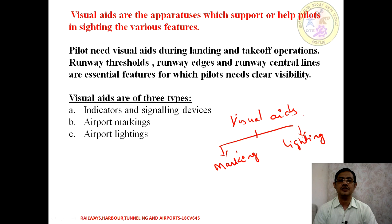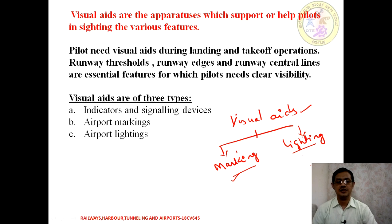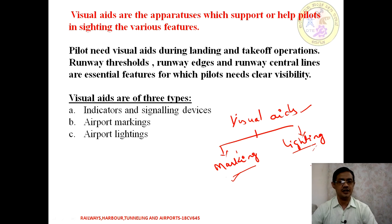Visual aids are composed of two things: marking and lighting. Markings are visible in the morning or on a clear sunny day with proper visibility. Suppose the same runway is used at night — markings may not be visible at a particular height, hence we need lighting for proper operation. Visual aids are classified into three types: indicators and signaling devices, airport marking, and airport lighting.